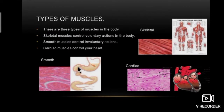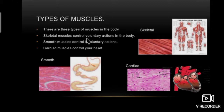There are three types of muscles in the body: skeletal muscle, smooth muscle and cardiac muscle. Skeletal muscles control voluntary actions in the body. Smooth muscles control involuntary actions. Cardiac muscles control your heart.